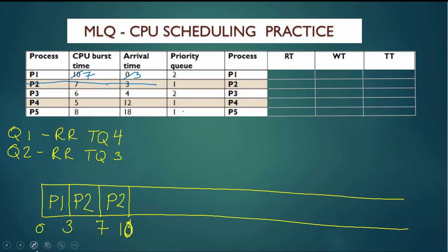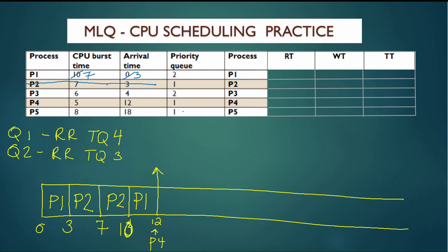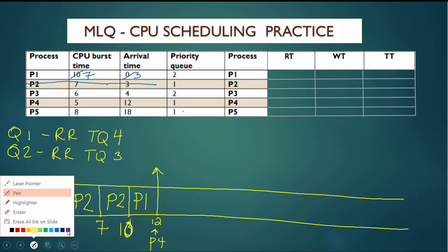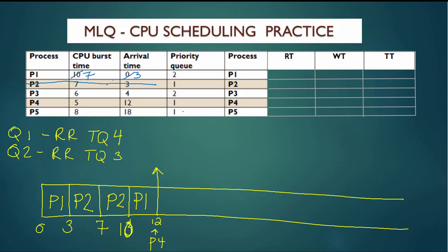P1 goes and should get three time units of CPU burst. However, at time 12 we have the arrival of P4, which is a higher priority process. So P4 arrives at time 12 and P1 is going to be preempted — not for time quantum, but because a higher priority task has arrived. We mark that P1 has a new arrival time at time 12, and has completed two more CPU burst units, leaving five time units of CPU burst remaining.